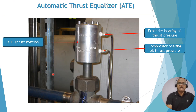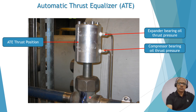This is a closer view of the ATE — the automatic thrust equalizer, sometimes also called the automatic thrust balancer (ATB). Both terms refer to the same device. This is the piston-cylinder arrangement with the valve connected to it. There is a sealing arrangement so that process gas does not pass through, and wooding to prevent oil leakage to that side. There are two ports: one for expander bearing oil thrust pressure and one for compressor bearing oil thrust pressure.